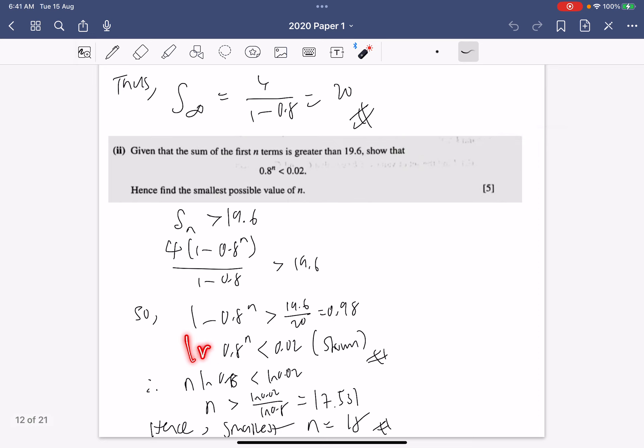And we're supposed to find the smallest possible value of this n, and we can just log both sides, bring the n down. Then when we divide over we need to switch the sign because the log 0.8 is negative, so we need to take that into consideration. And then we get this and hence we will find the smallest value n which is 18.